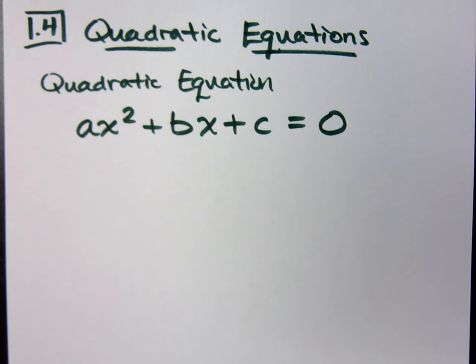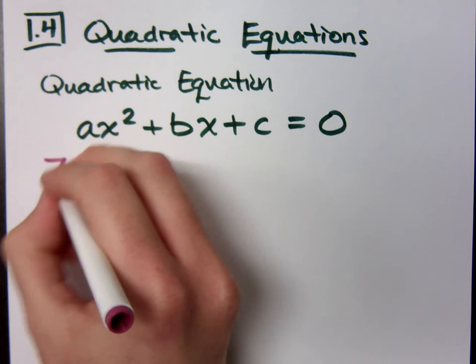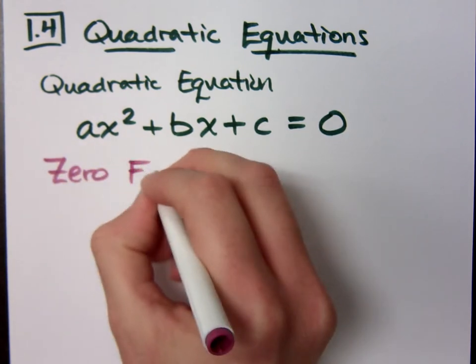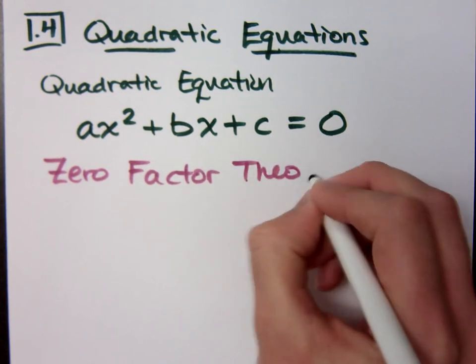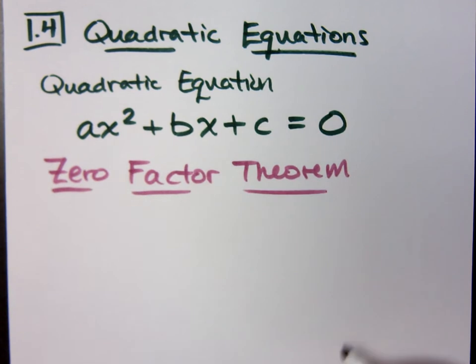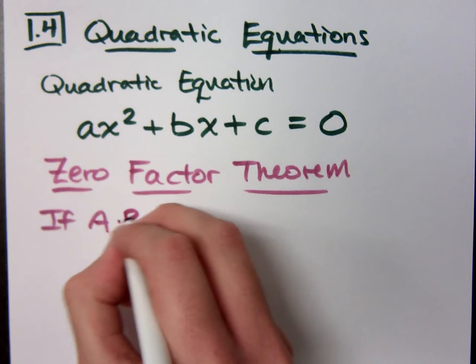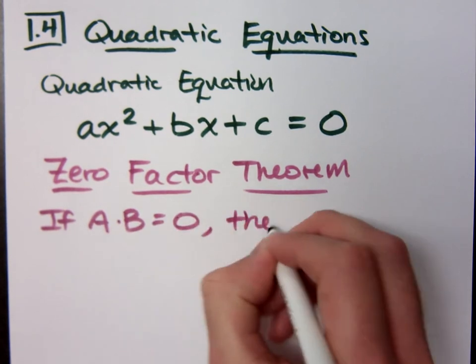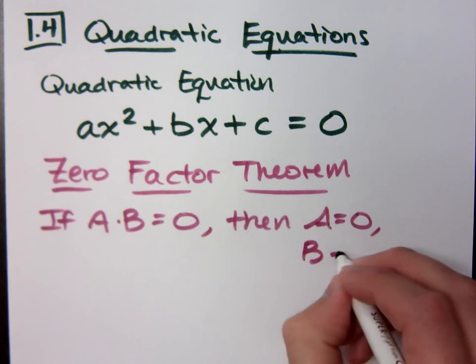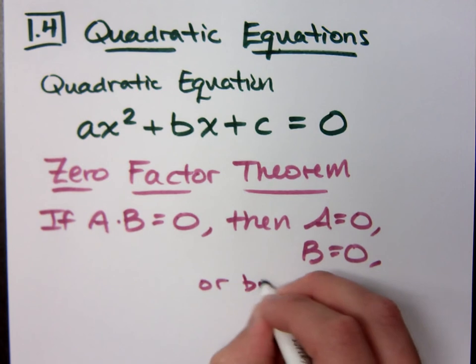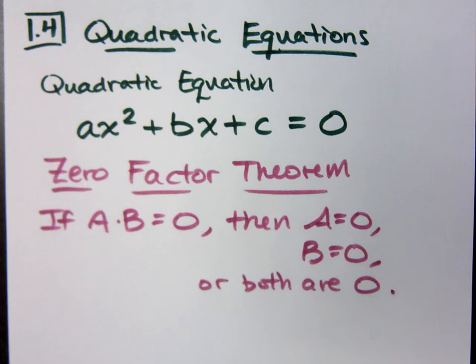Now, here's the key thing that if we don't have this, we can't really go anywhere else. This is the zero factor theorem. I believe the book calls it the zero factor property, but we call it the zero factor theorem. Remember what it says? It says that if you have a product that equals zero, then our conclusion is that a is equal to zero, b equals zero, or both factors are zero. That's what the zero factor theorem says.